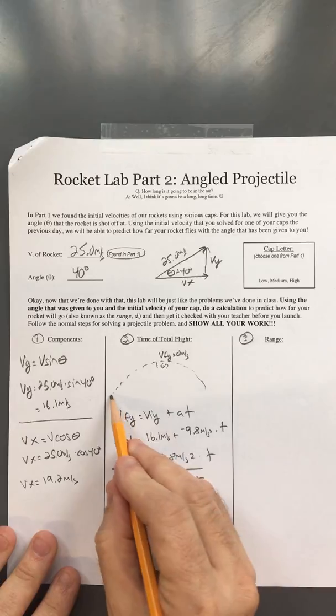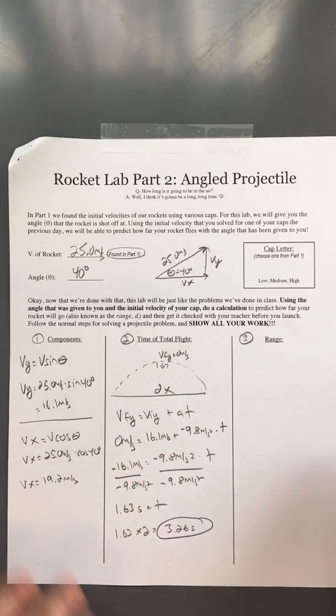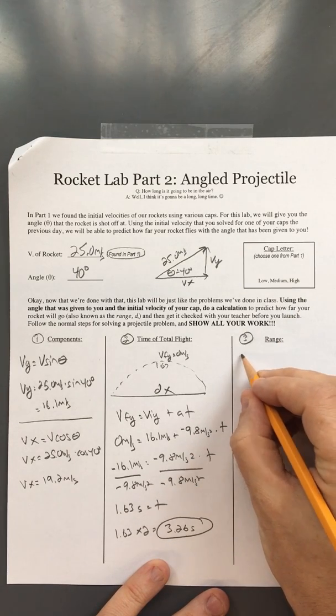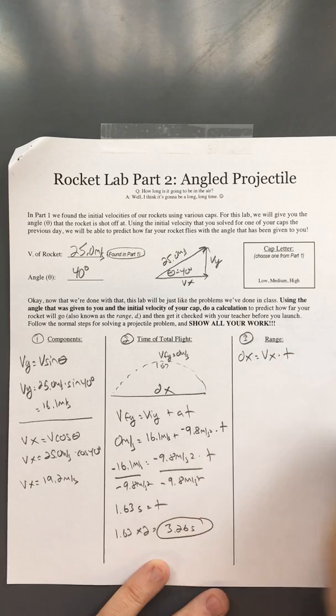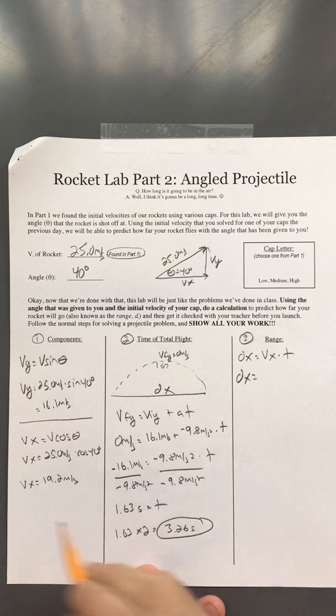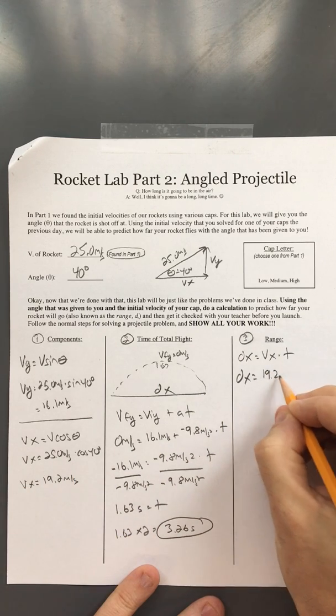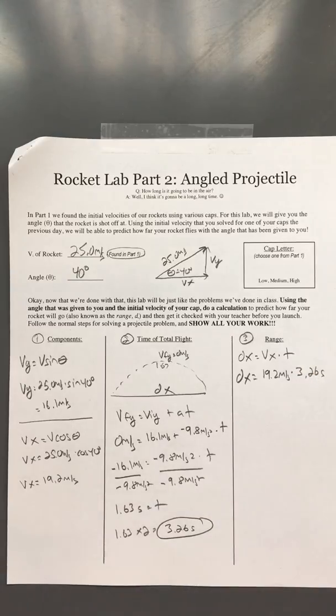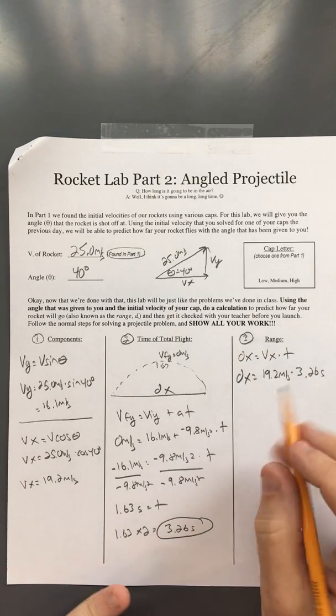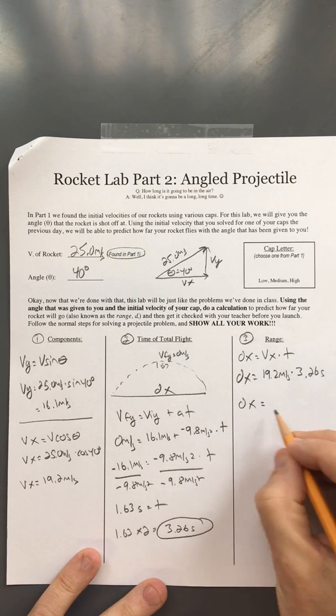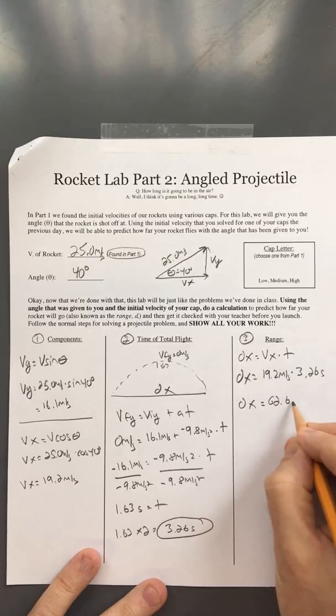Lastly, our range is dx. We know there's no acceleration horizontally, so dx equals Vx times T. With dx being our unknown, our horizontal velocity is 19.2 meters per second, and our total time is 3.26 seconds. Multiplying those together, we get a horizontal range of 62.6 meters.